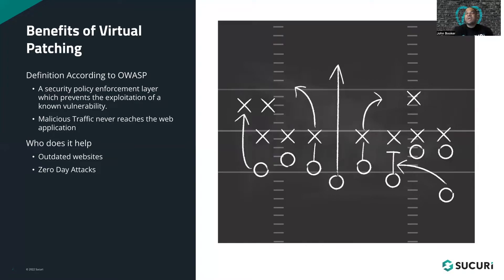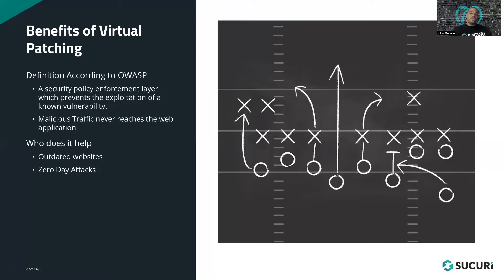As you can see in the diagram on screen, I relate a lot of things to sports and football. There are different layers of defense on the football field, and once someone gets past the first level, there's typically another level there. The linebackers are there to plug up any of the holes left by the defensive line. In some ways, that is exactly what virtual patching is. You don't want your linebackers to have to fill those holes all the time, but if there's an emergency, they're there to take care of it. That's kind of how I look at virtual patching.